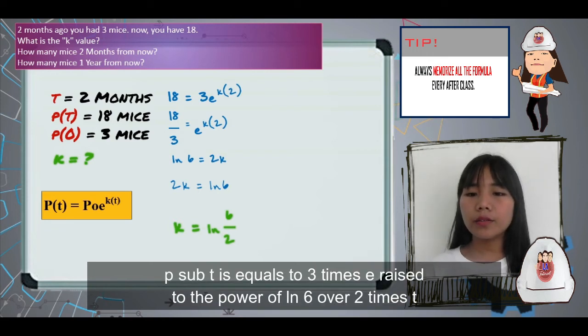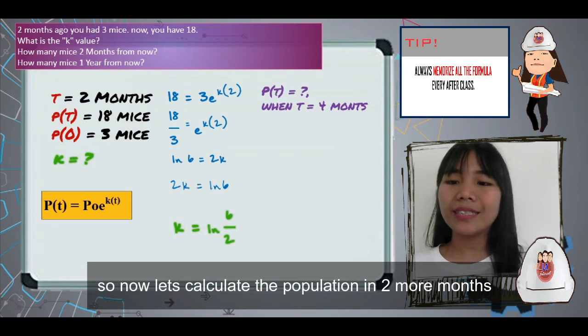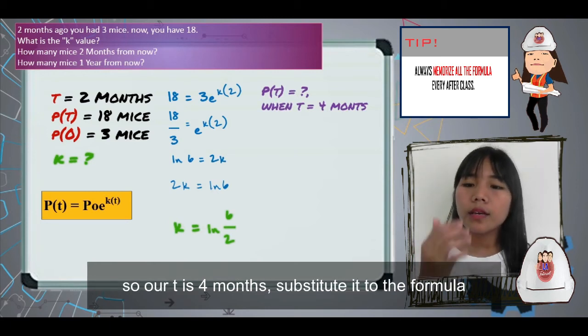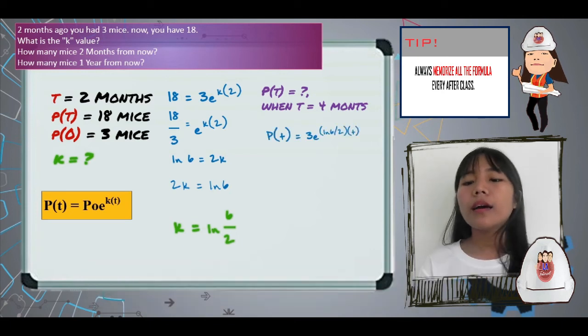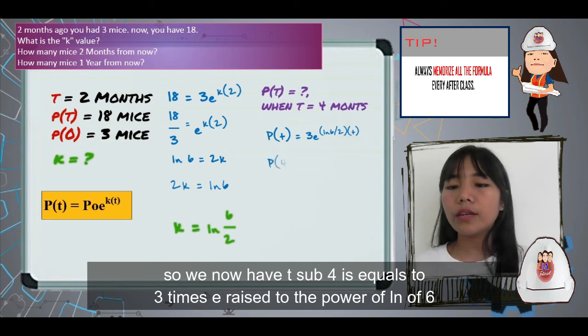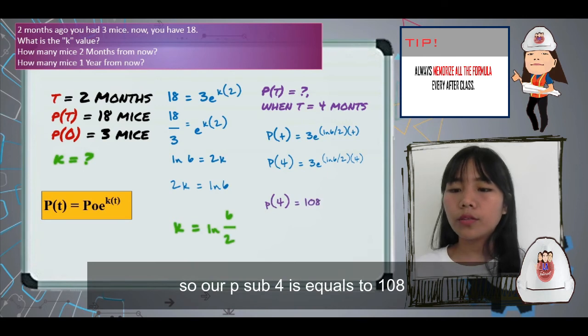P(t) equals 3 times e raised to the power of ln of 6 over 2 times t. Now let's calculate the populations in 2 more months. Our t is 4 months. Substitute it to the formula. We now have P(4) equals 3 times e raised to the power of ln of 6 all over 2 times 4. Our P(4) equals 108.